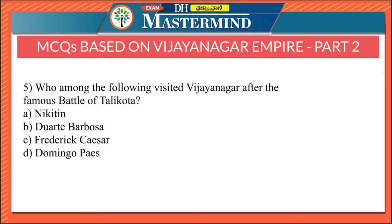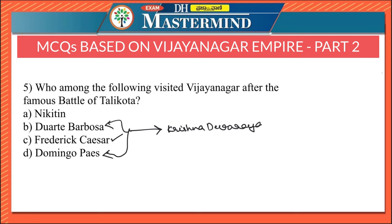The next question asks who among the following visited Vijayanagara after the famous Battle of Talikota. The options are Nicolo Conti, Duarte Barbosa, Frederick Caesar, and Domingo Pace. The correct answer is Frederick Caesar — Option C. Both Duarte Barbosa and Domingo Pace visited during the reign of Krishna Devaraya. Frederick Caesar visited after Talikota, when the empire had declined, and documented wild animals roaming the ruined streets of Vijayanagara in his writings.